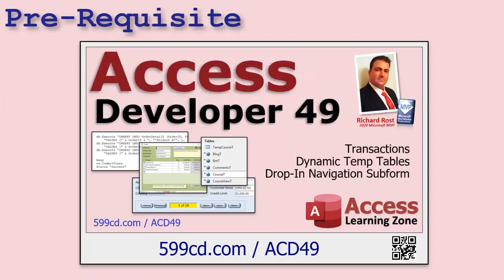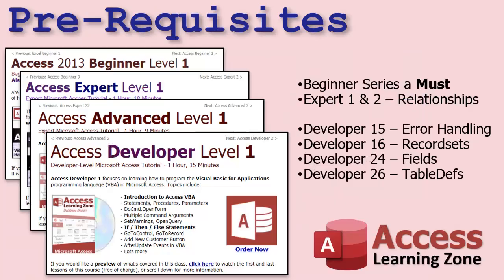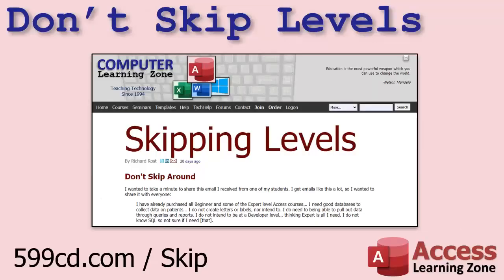This class follows Access Developer 49. While I strongly recommend you take all of my classes in order, it's not necessary, but you should have a good solid understanding of Access. The Beginner series is a must, the Expert series — especially the stuff on Relationships. Developer 16 will be important because we are going to use record sets today. I strongly recommend you don't skip levels.